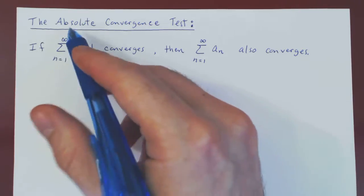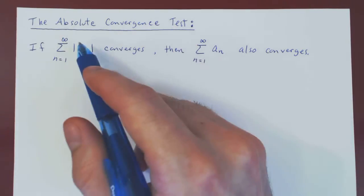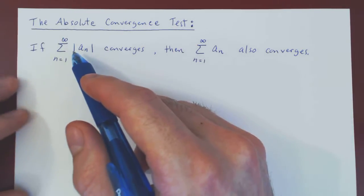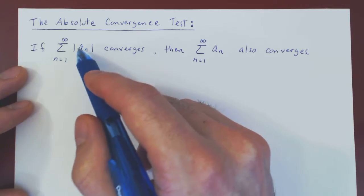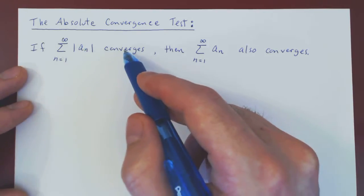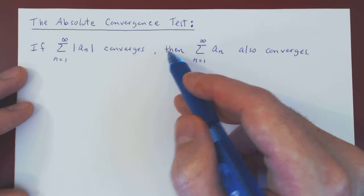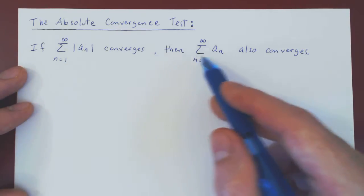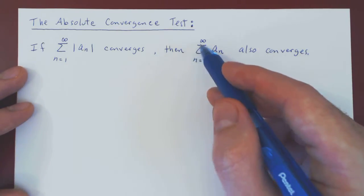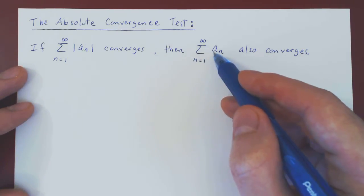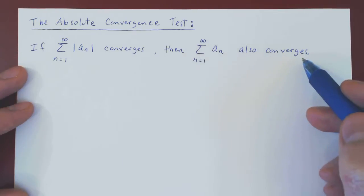In this video we will prove the absolute convergence test, which says quite simply that if the series of the absolute value of aₙ converges, then automatically you can drop the absolute value and still have convergence. So the series of aₙ without the absolute value also converges.